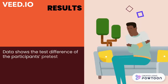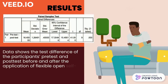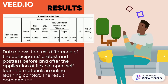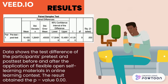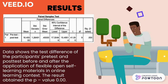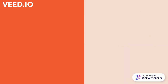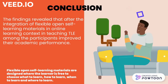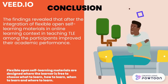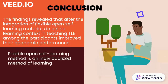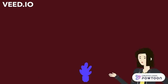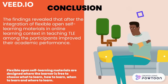Data shows the test difference of the participants' pre-test and post-test before and after the application of flexible open self-learning materials in an online learning context. The result obtained a p-value of 0.00. The findings revealed that after the integration of flexible open self-learning materials in online learning context in teaching TLE, participants improved their academic performance.